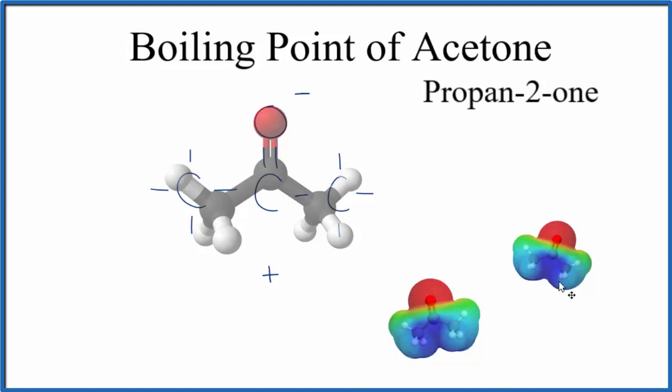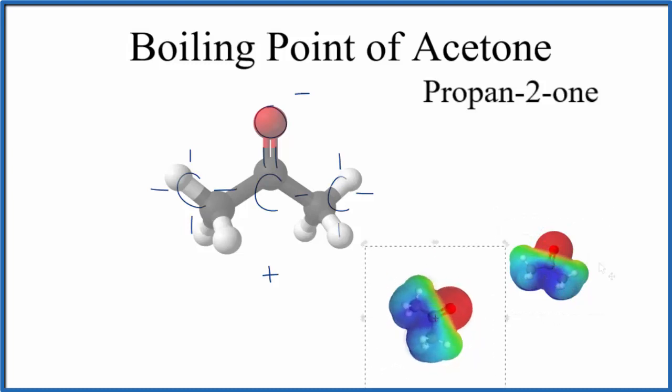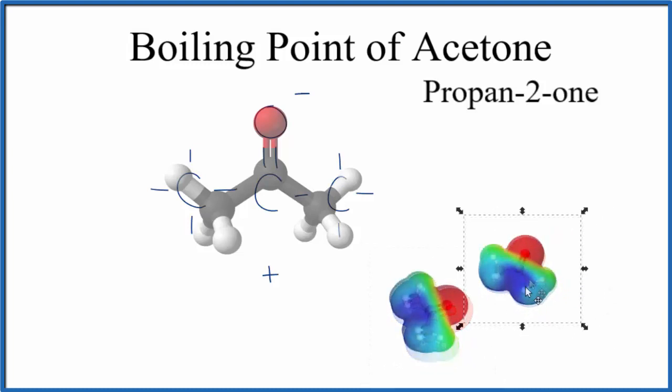So you can imagine if we had two molecules of acetone, how they might line up. So we'd have the negative side aligned with the positive side. That polarity, because they're attracted to each other, makes them kind of stick together. So we have to put a lot more energy in to separate them, to form a gas, to make them boil.